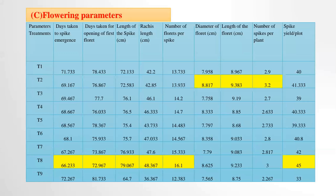For flowering parameters — days taken to spike emergence, days taken for opening of the first florets, length of the spike, and rachis length — good results were obtained in T8. Diameter of florets, length of florets, and number of spikes per plant gave good results in T2, where humic acid alone was used.